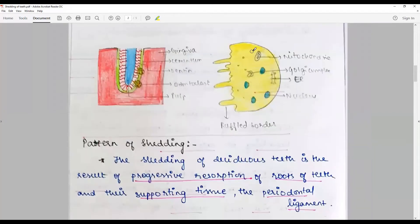Pattern of shedding: They have numerous mitochondria, actively shedding rough endoplasmic reticulum, Golgi apparatus, multinucleated with a ruffle border that secretes acid phosphatase to resorb the minerals in tooth structures.